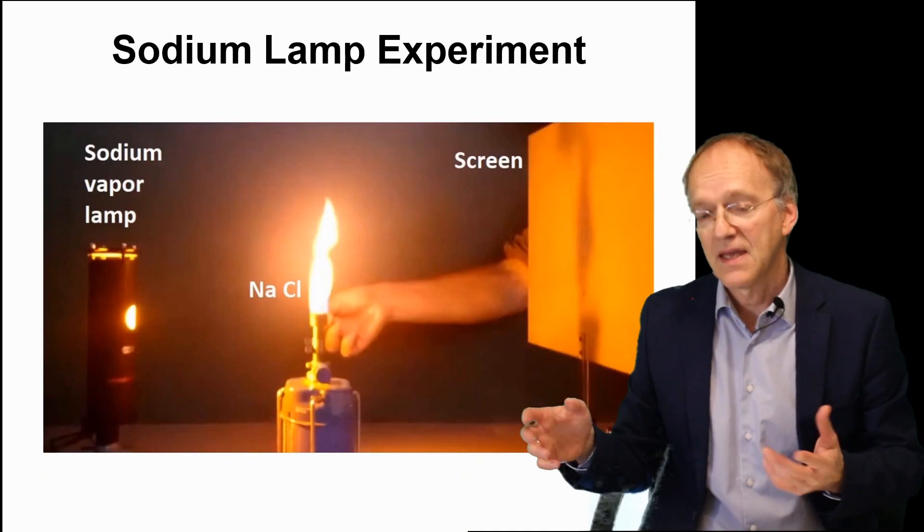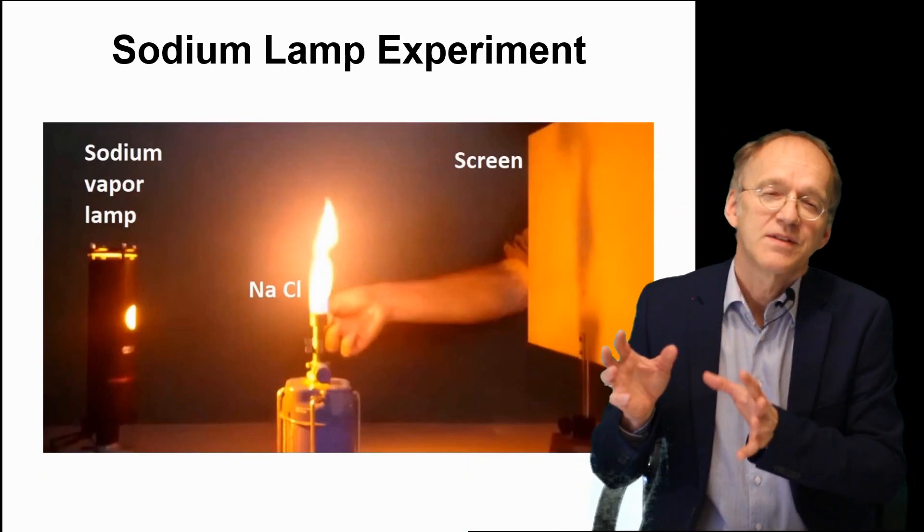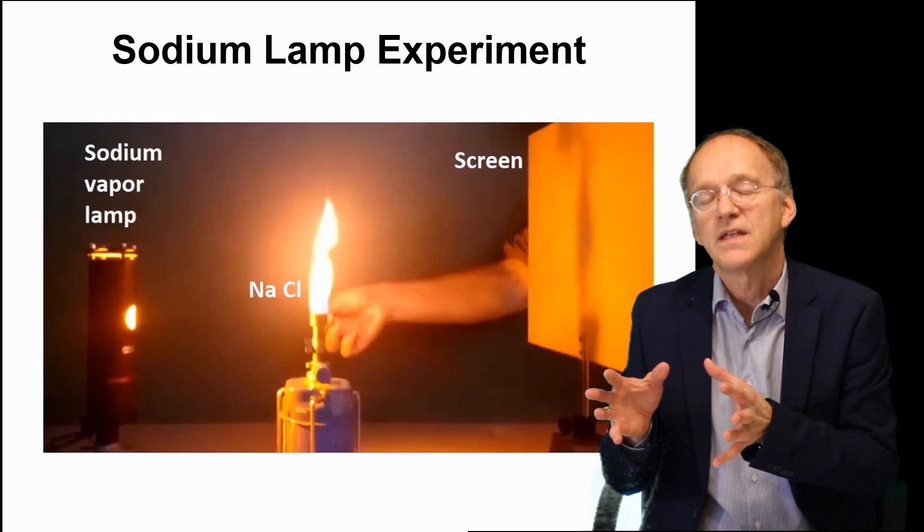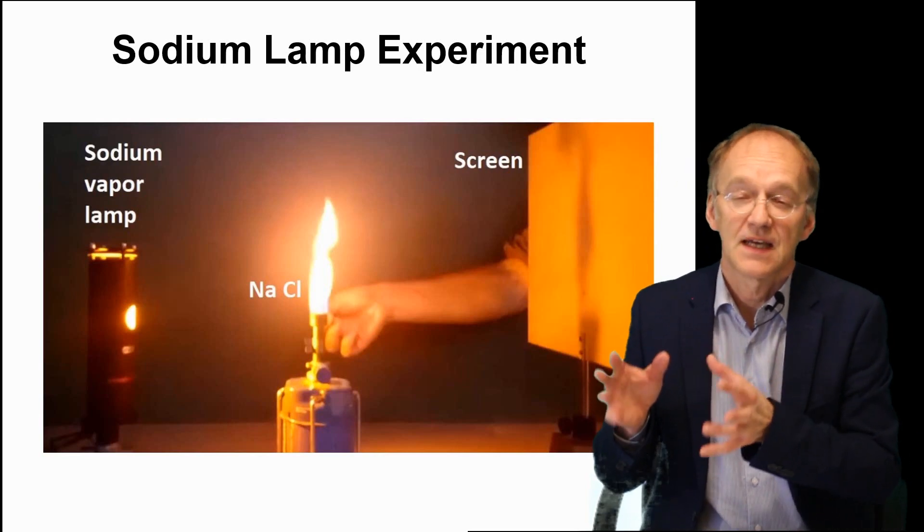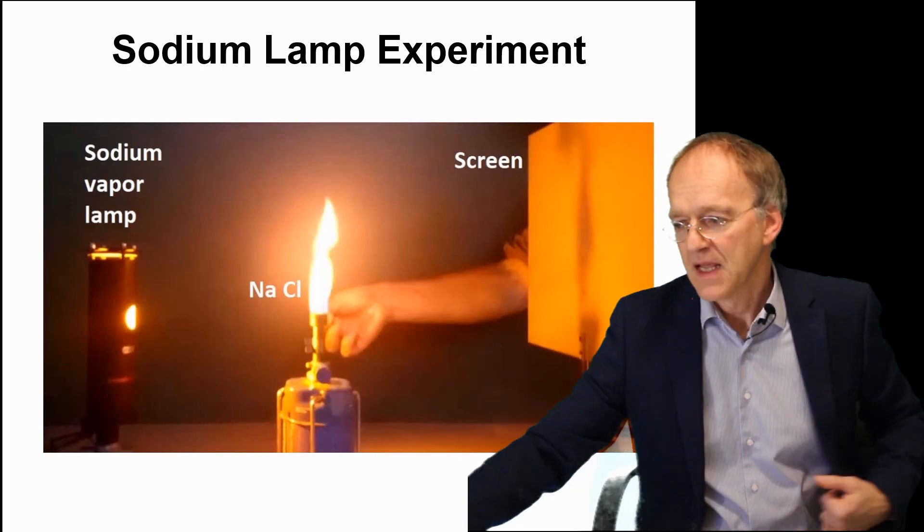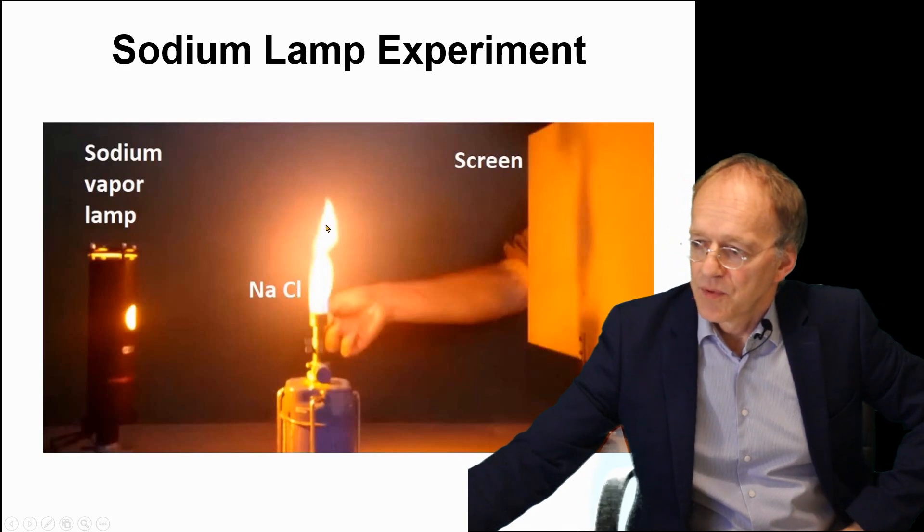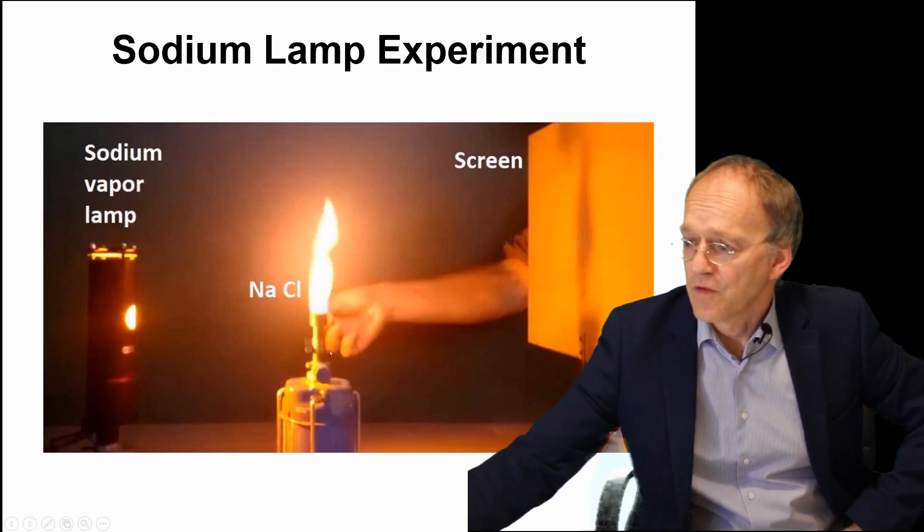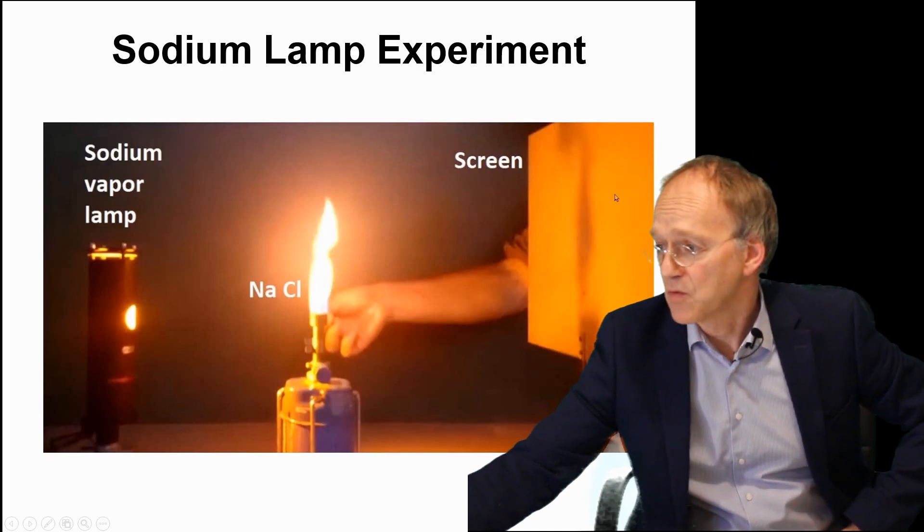A sodium vapor lamp emits light of very distinct frequency. We know that it's 589 nanometers in wavelength, and if you put a camping stove with a flame in front of that light beam, nothing happens.